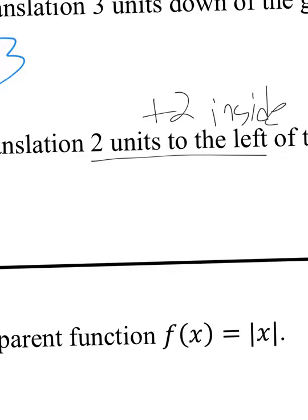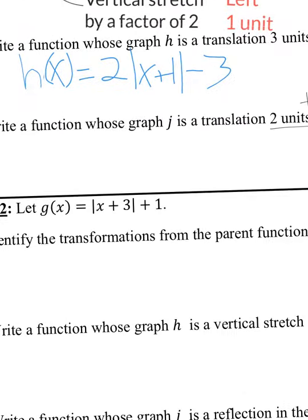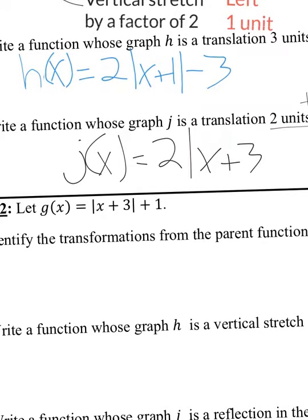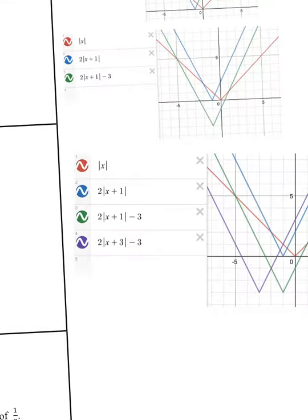We already had a plus 1 on the inside, so J of x equals 2 times the absolute value of x plus 3 minus 3, because I added one plus two to get three. Type this into the graph and we should see it two units to the left of the H of x graph — and it is, just changing that plus 1 to a plus 3.